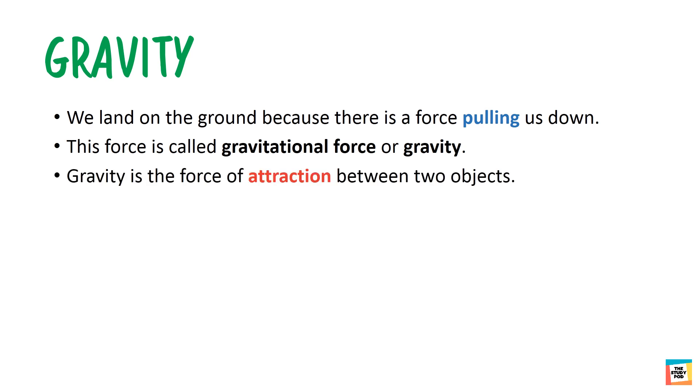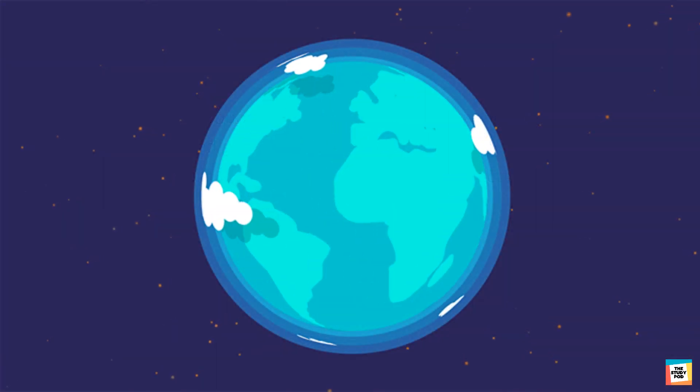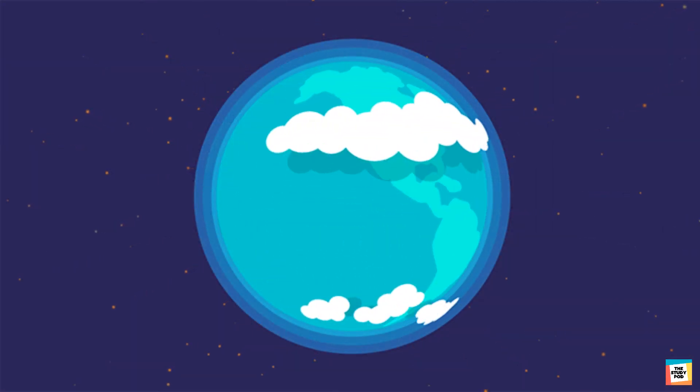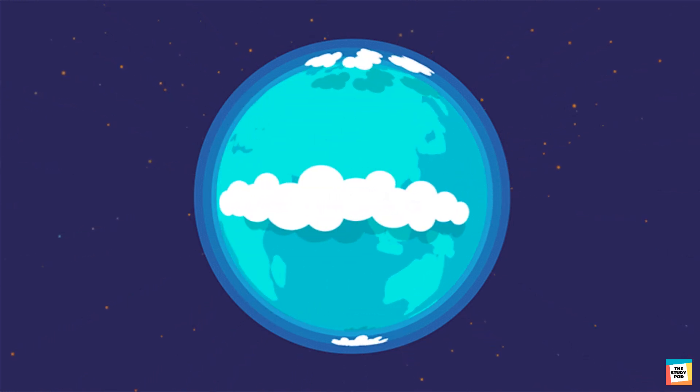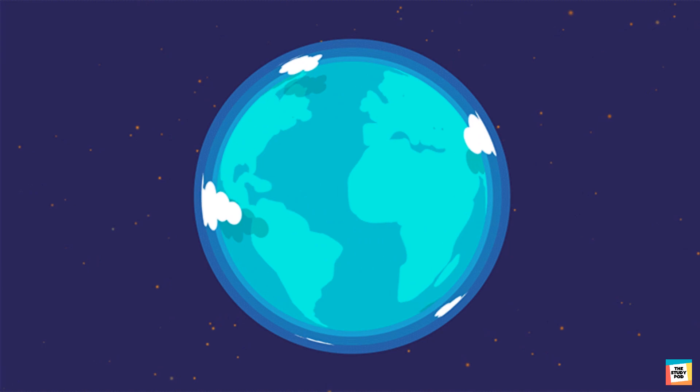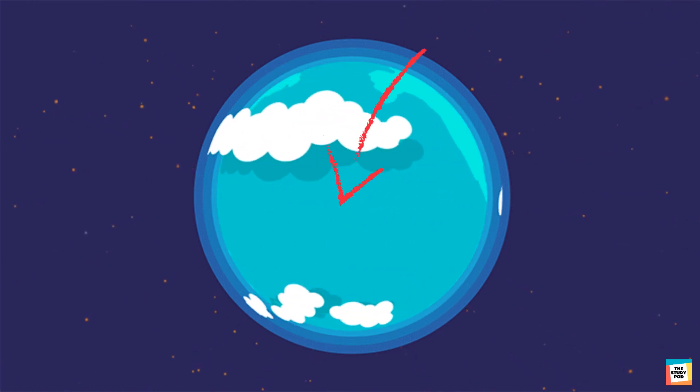Gravity is the force of attraction between two objects. There is a force of attraction between the earth and any object near the surface of the earth. That is why objects in the air always fall back to the ground, towards the center of the earth.